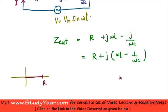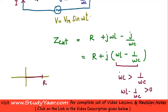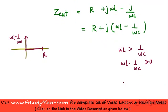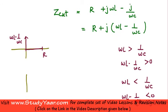On the complex plane, R lies along the real axis and (omega L minus 1 upon omega C) lies along the imaginary axis. If omega L is greater than 1 upon omega C, then (omega L minus 1 upon omega C) is positive, so the imaginary part is positive. If however omega L is less than 1 upon omega C, then (omega L minus 1 upon omega C) is negative, meaning the impedance vector points in the negative imaginary direction.